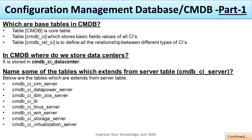What are the base tables in CMDB? The core table name is CMDB and CMDB_CI, which hold the basic field values of all CIs. CMDB and CMDB_REL_CI are used to define all the relationships between different types of CIs.